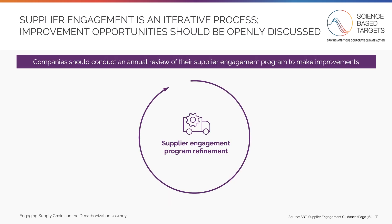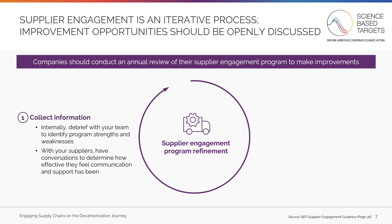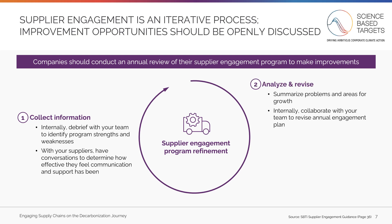Supplier engagement is an iterative process, and you should openly discuss improvement opportunities on a regular basis. Every year, you should review how your supplier engagement program is performing to see what has and hasn't worked. This process includes three steps. First, collect both internal and external data on program performance — internally, debrief with your project team to identify program strengths and weaknesses; with suppliers, have conversations to determine how effective they feel communication and support has been throughout the year. Next, summarize the themes of your internal and external conversations and collaborate with your supplier engagement team to revise the annual engagement plan.